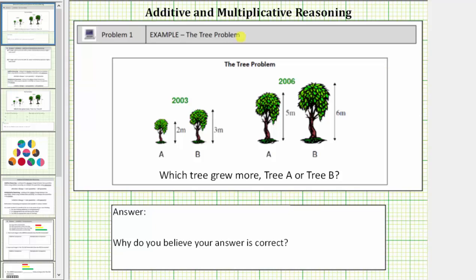Welcome to a lesson on additive and multiplicative reasoning. In this first problem, we're given the heights of two trees in 2003 and then the heights of the same two trees in 2006. And we're asked the question: which tree grew more, tree A or tree B?